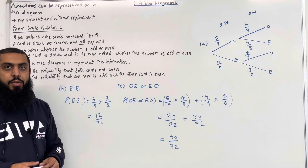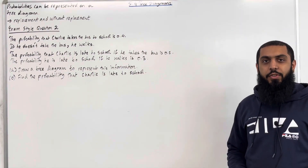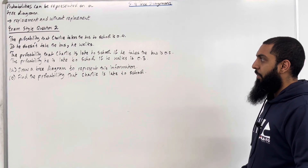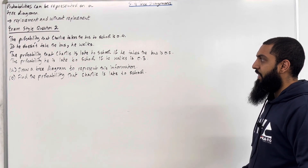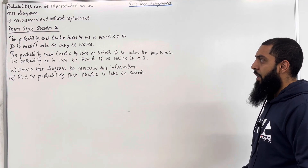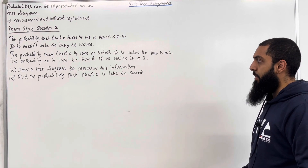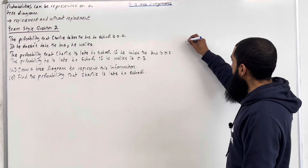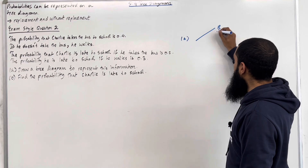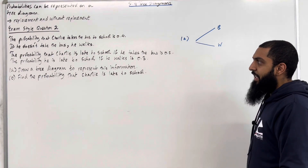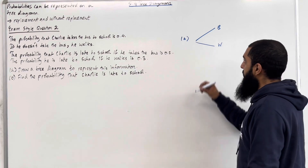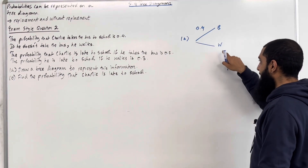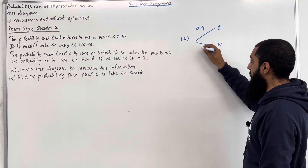This completes exam style question 1. Let's have a look at exam style question 2. The probability that Charlie takes the bus to school is 0.4. If he doesn't take the bus, he walks. The probability that Charlie is late to school if he takes the bus is 0.2. The probability that he is late to school if he walks is 0.3. Part A: draw a tree diagram to represent this information. So Charlie can take the bus to school or he can walk to school. The probability that Charlie takes the bus is 0.4, so the probability that Charlie walks will be 1 − 0.4 = 0.6.